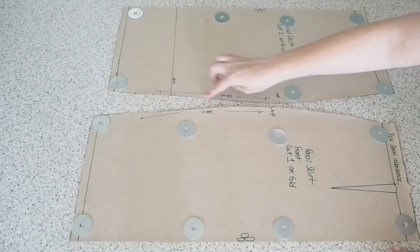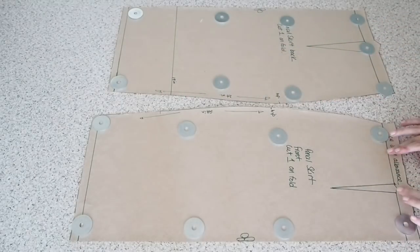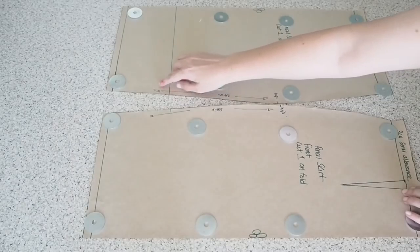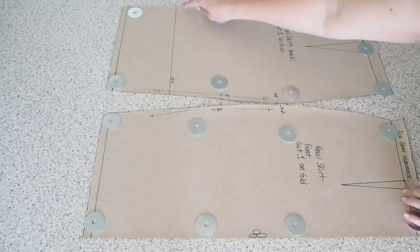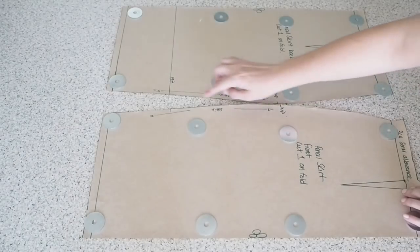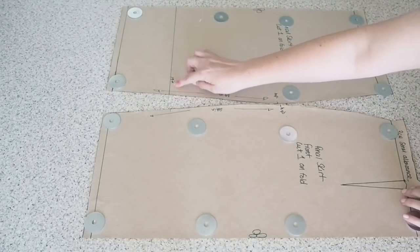So for the purposes of this video I am using a pencil skirt pattern that I want to add a flounce to the bottom. It doesn't have to be a pencil skirt, it could be any skirt, it could be a top, it could be a sleeve, just any pattern piece that you want to add a flounce to.